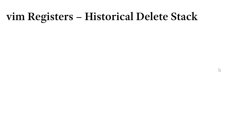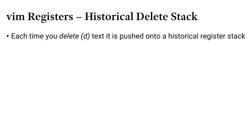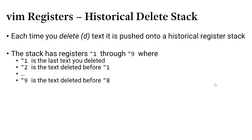Whenever you delete text, that text gets stored in a stack of registers that get pushed further down the longer ago you deleted them. So anytime you delete text, it goes into a historical register stack — these registers have numbers one through nine. One is going to be the most recently deleted text, followed by two, whatever you had deleted before it, and all the way through nine.